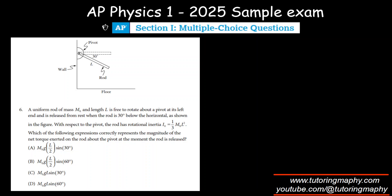This problem is based on rotation. A uniform rod of mass M and length L is free to rotate about a pivot at its left end and is released from rest when the rod is 30 degrees below the horizontal.